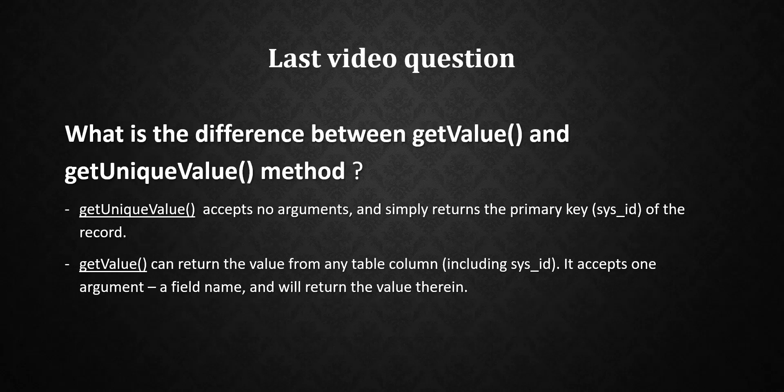In the last video I asked about the difference between getValue() and getUniqueValue(). getUniqueValue() accepts no arguments and simply returns the primary key — the sys_id — of the record. getValue() can return the value from any table column, including sys_id; it accepts one argument, a field name, and returns the value in that field. The main difference is that getUniqueValue() needs no parameters, while getValue() requires the field name.